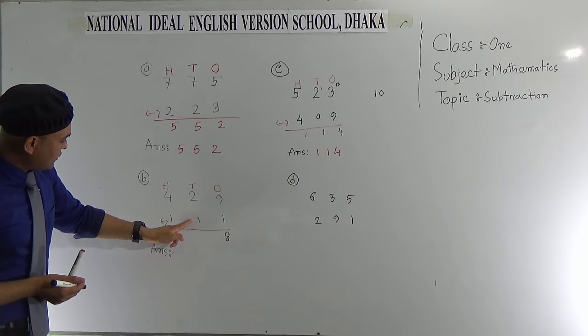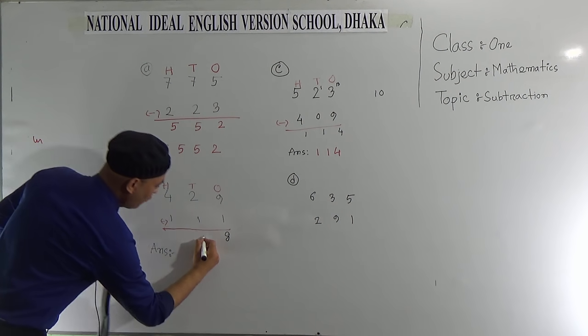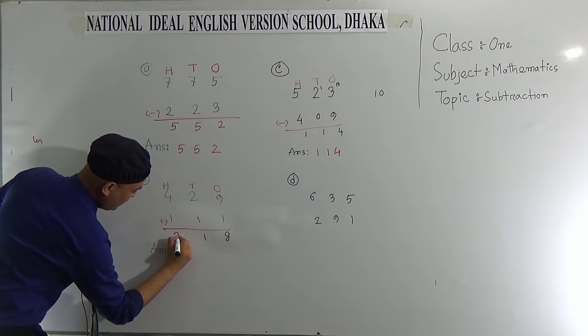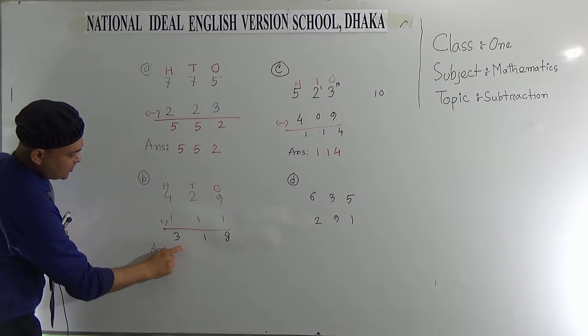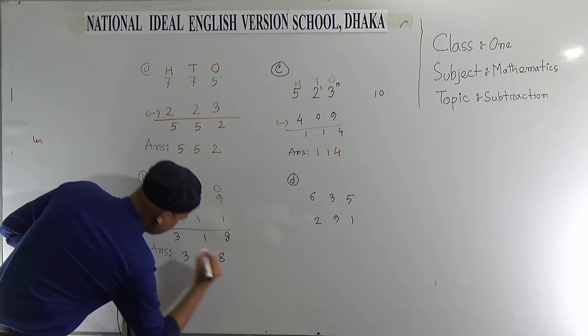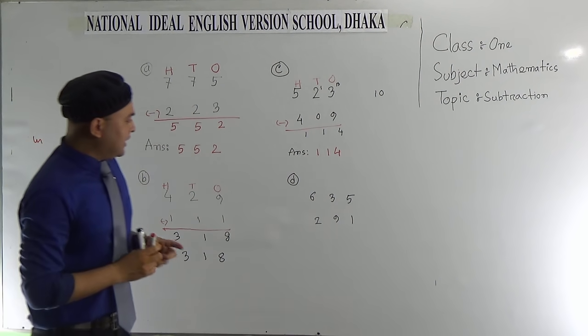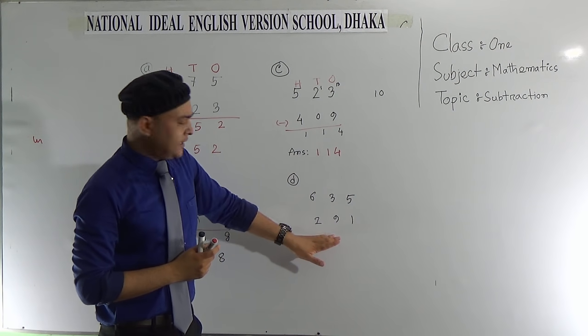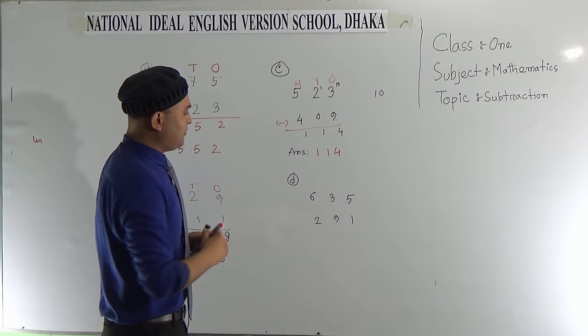Then move to the next column, that is 10's column. Subtract 1 from 2, it will be 1. And subtract 4 from 7, it will be 3. So the answer will be 318.